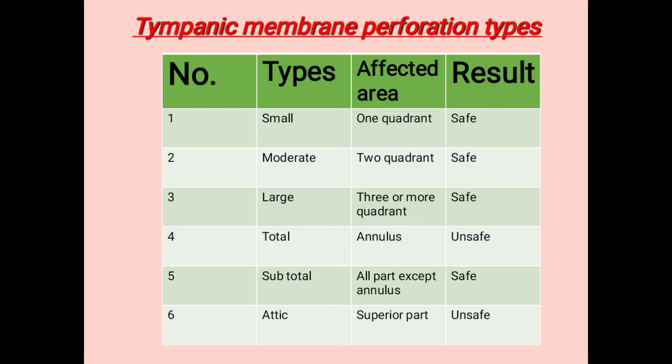In subtotal perforation, all of the pars tensa area is involved except the annulus region. Next is marginal perforation, also called total perforation, because in this type the annulus area also gets perforated — it is an unsafe type of perforation. Next is attic perforation, where the superior part of the tympanic membrane is affected — also an unsafe type of perforation.